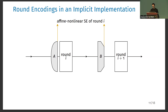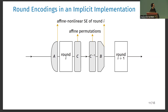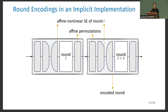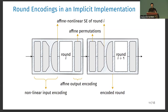To build the rounds of an implicit implementation, we first decompose the cipher into rounds. Then we introduce an affine non-linear self-equivalence of the round where the first element is affine and the other is non-linear. Since they cancel each other, it doesn't change the input and output behavior. We then introduce between the output of the round and the second element of the self-equivalence an affine permutation C and its inverse, and we do this for all rounds. We merge the round function with part of the self-equivalence and part of the affine permutation, splitting them over adjacent rounds. The encoded rounds are built such that the input encoding can be non-linear, but the output encoding is always affine.